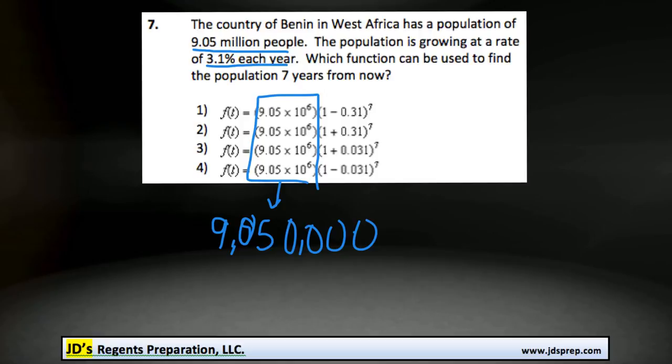And then, what we need to do is figure out what 3.1% is as a decimal value. And we're going to do that by dividing by 100. 3.1 divided by 100 is 0.031.